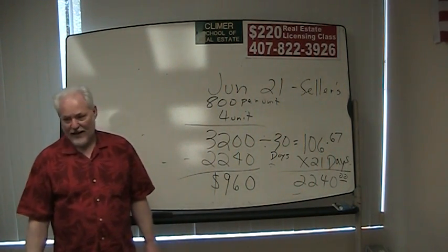By the way, if you don't have the Florida Real Estate Exam Manual for Sales Associates, you need to get it. It's an outline of the book we're teaching this class out of, and it has 400 practice questions in the back with answers and explanations, plus a CD with additional questions for your computer. We sell it here at Caliber School of Real Estate for $20. You can call Kathy at 407-822-3926 or buy it on the website.